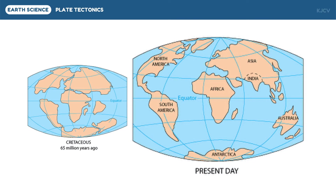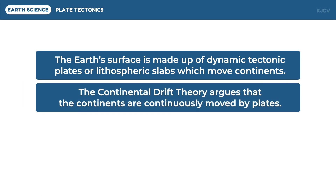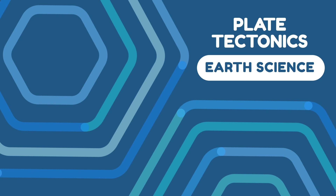These plates are continuously moving, as evident in the numerous earthquakes which happen around the world every day. To review the key points: The Earth's surface is made up of dynamic tectonic plates, or lithospheric slabs, which move continents. The continental drift theory argues that the continents are continuously moved by plates. And lastly, the supercontinent Pangea broke apart, giving rise to Laurasia and Gondwana, which then gave rise to the present continents and oceans. That ends our discussion on plate tectonics.